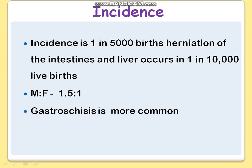Abdominal wall defects occur in about 1 in 5000 live births. Herniation of intestine and liver occurs in about 1 in 10,000 live births. The male to female ratio is 1.5 to 1, so it is more common in males. Comparing the two conditions, Gastroschisis is more common than Omphalocele.